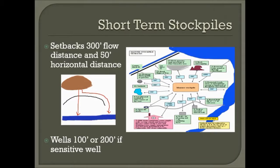For short-term stockpile sites, there's generally a 300-foot setback from a sensitive feature. Exceptions include lakes, which require a 1,000-foot setback, and wells, which range from 100 to 200 feet depending on the well type. There is also an exemption allowing a stockpile as close as 50 feet if the flow distance to the sensitive feature is 300 feet. For example, if a hill causes runoff to travel 300 feet around it to reach a river, the 50-foot horizontal distance or 300-foot flow distance rule applies.